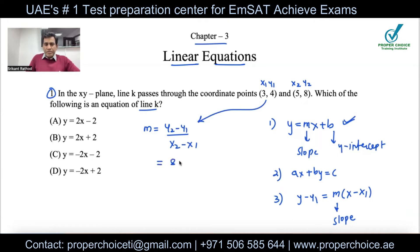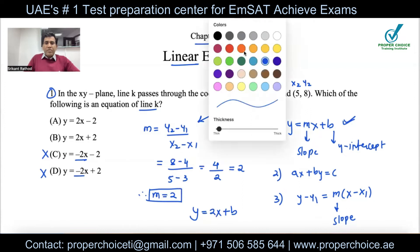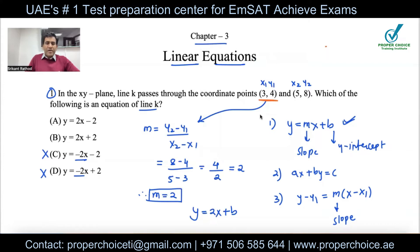Substituting the coordinate points: slope m = (8 − 4) / (5 − 3) = 4 / 2 = 2. So the slope is 2 and my equation becomes y = 2x + b. Just from this step you can eliminate options C and D, which have a negative slope. Now to solve for b, you can substitute any coordinate point — (x₁, y₁) or (x₂, y₂) — into the equation, or use the point-slope form.